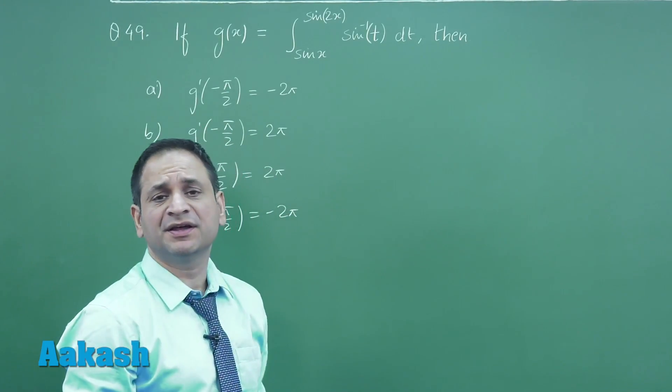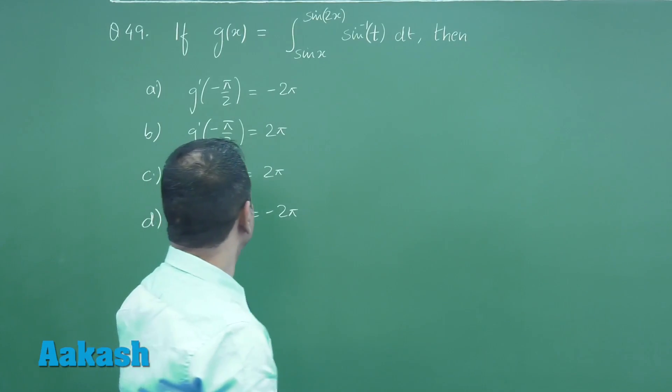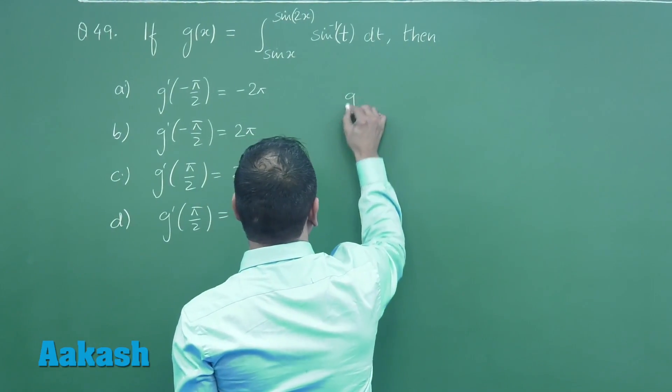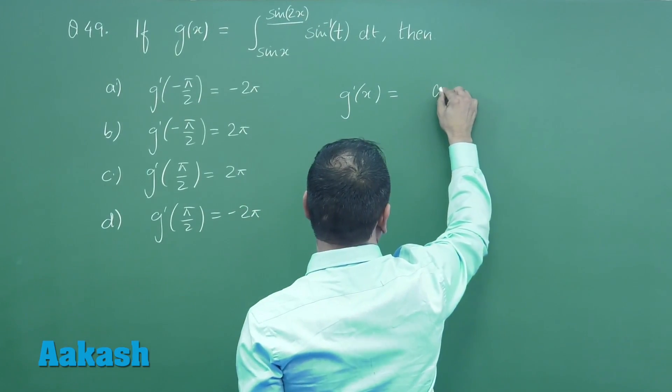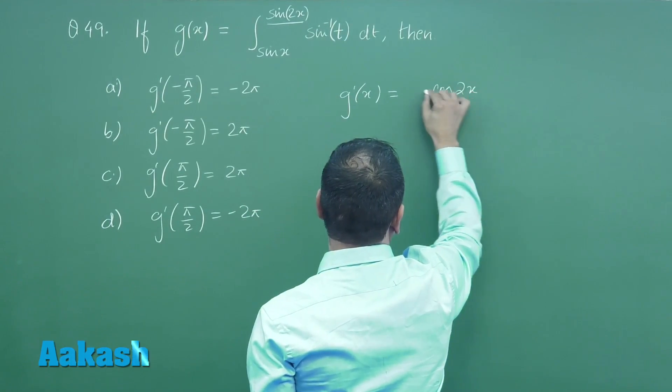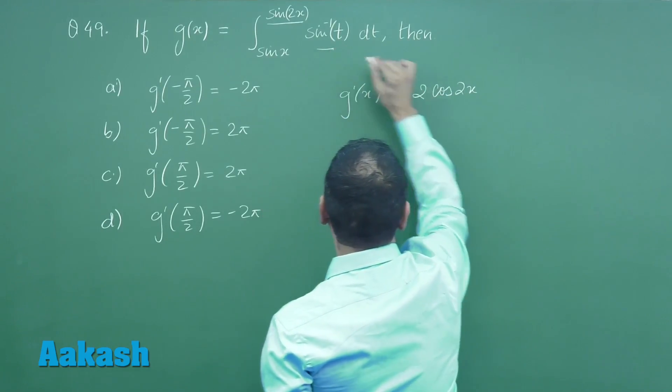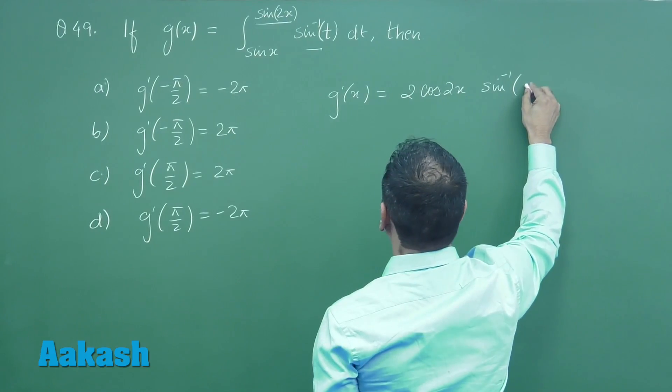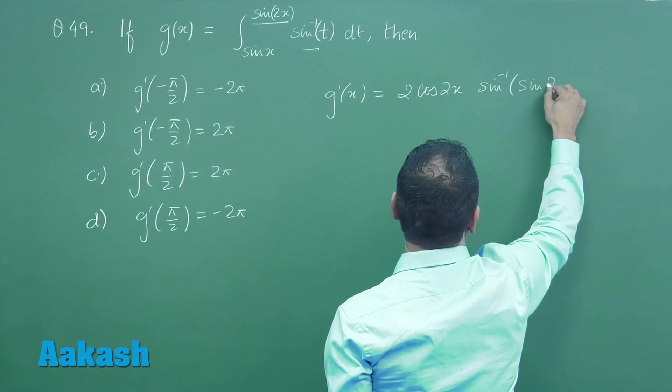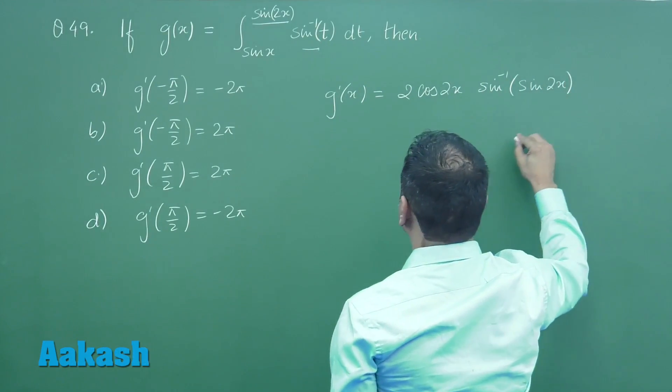So we just have to differentiate this. Differentiating this, we have the derivative which is cos 2x times 2, and substituting t here we have sin inverse of sin 2x minus the derivative of the lower limit.